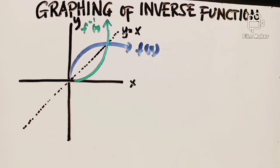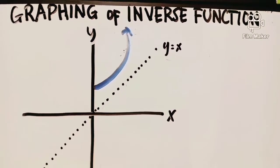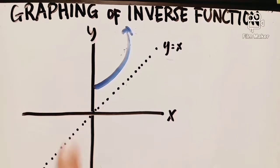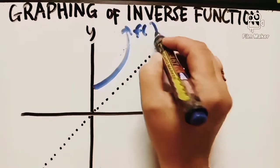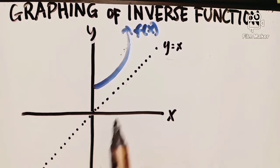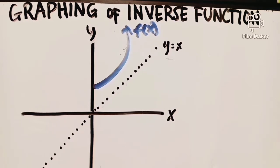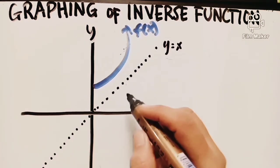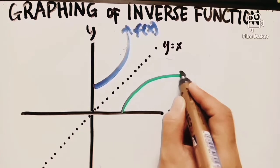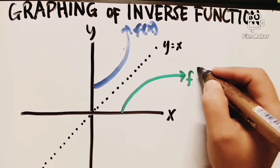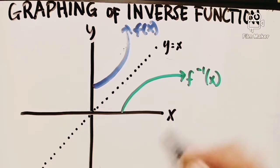I will give another graph example so we can see how to graph an inverse function. This is the graphing of inverse function again. This is the next graph — this is f(x). How do we get it? If it starts at y, it should go to x. So what will its reflection look like? The complete opposite. Let us graph it to see the shape. This is our inverse function, and that is its reflection.